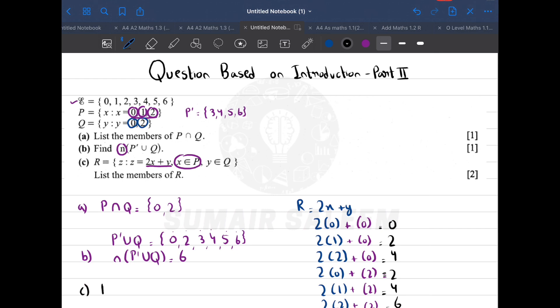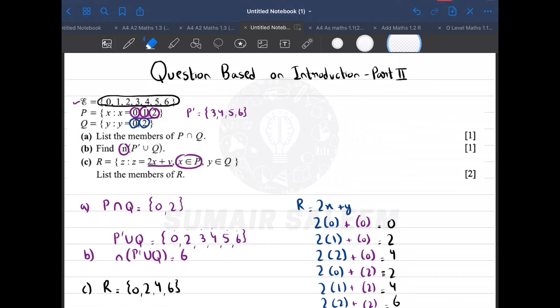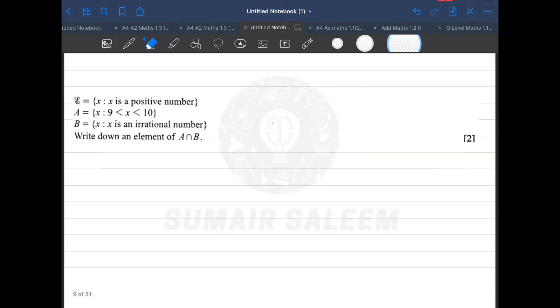So I'm going to write here: set R is {0, 2, 4, 6}. Can I write 2 and 4 twice? No, basically all sets are made from universal set, and if you notice there is only one 2 in universal set and only one 4 in universal set.